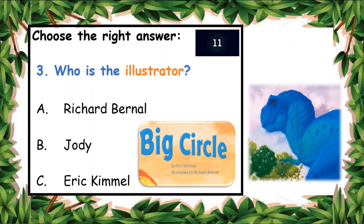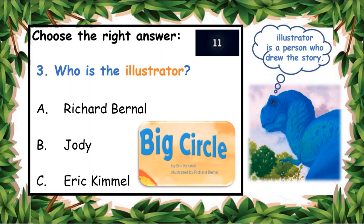The next question: who is the illustrator? Karim, remind us — what does illustrator mean? The illustrator is the person who drew the story. You can find it under the author's name. A: Richard Bernal, B: Jody, C: Eric Carle. You have ten seconds to answer. A: Richard Bernal. Yes, Richard Bernal!